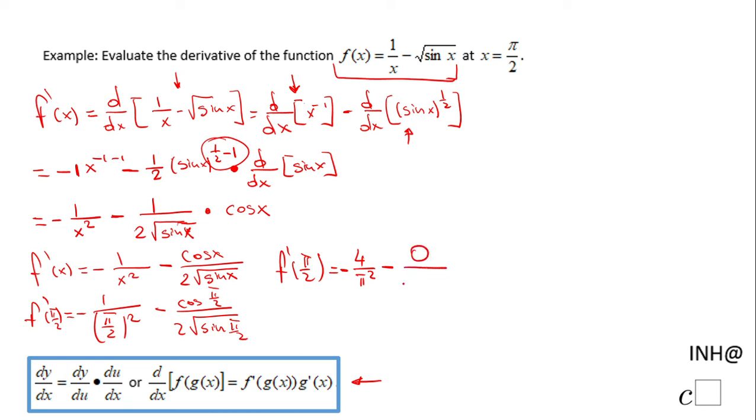Over 2 times square root of sine of pi over 2 will be 1. All this last part is nothing else than 0, so the final answer for our problem is negative 4 over pi squared.